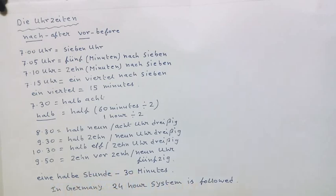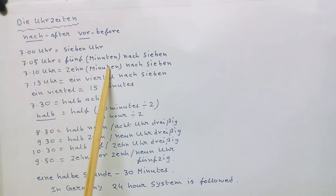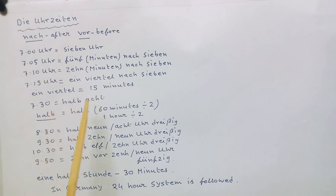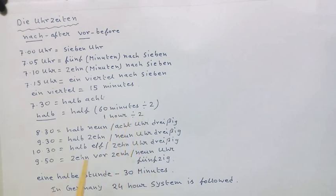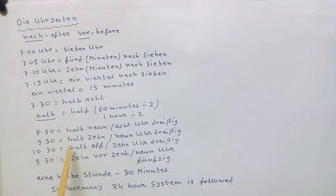In Germany, the twenty-four hour system is followed. Now I repeat: sieben Uhr — fünf Minuten nach sieben — five minutes after seven. Zehn Minuten nach sieben — ten minutes after seven. Ein Viertel nach sieben — fifteen minutes, that is one quarter, after seven. Seven thirty — halb acht, that is thirty minutes before eight. Halb neun — eight thirty, thirty minutes before nine, or acht Uhr dreißig. Halb zehn — nine thirty, thirty minutes before ten, or neun Uhr dreißig. Halb elf — ten thirty.